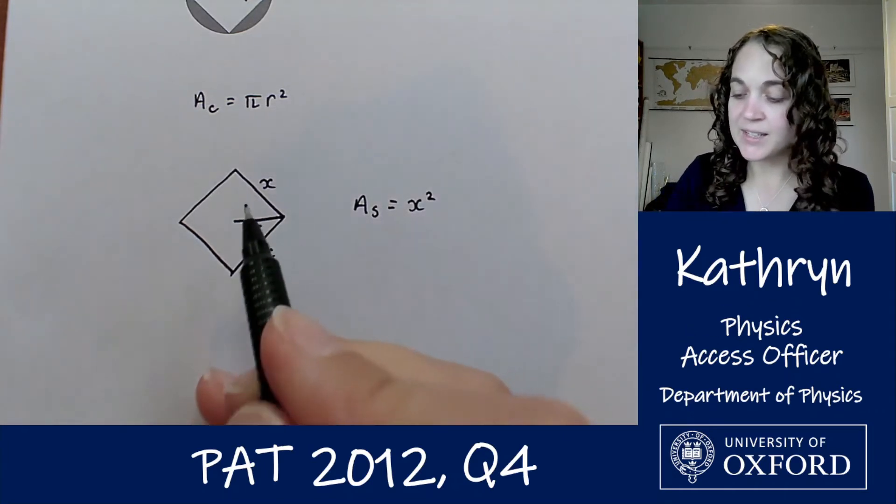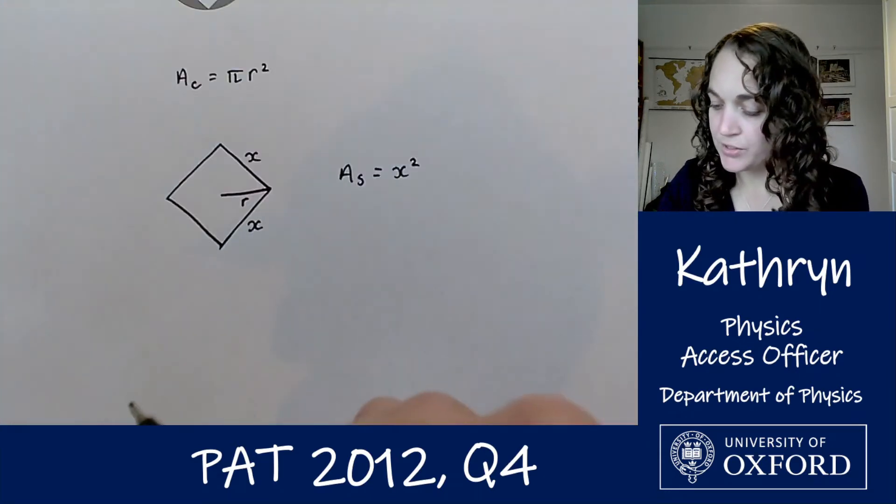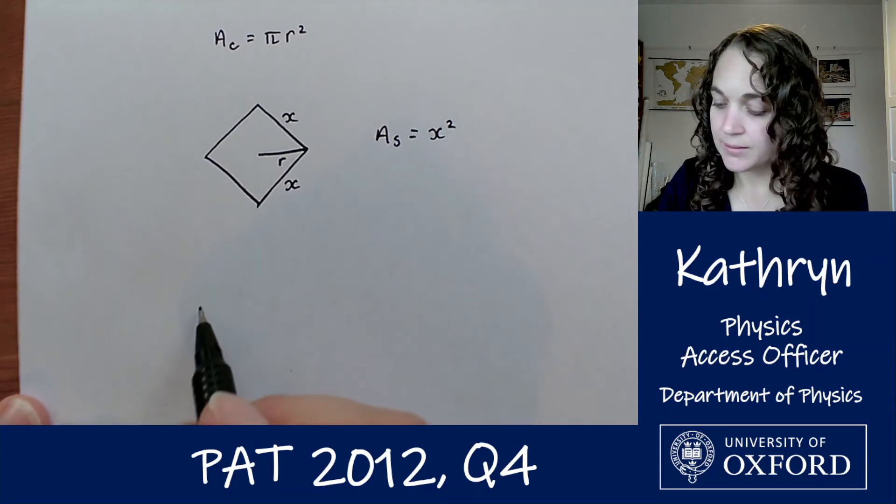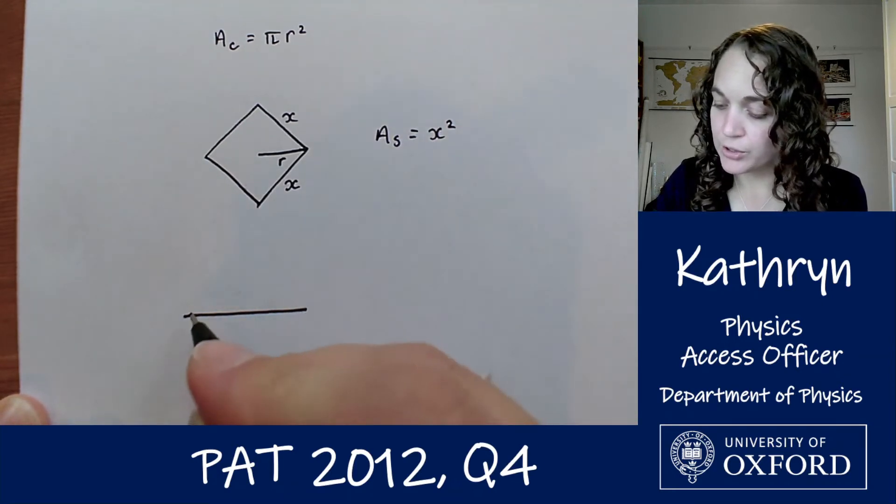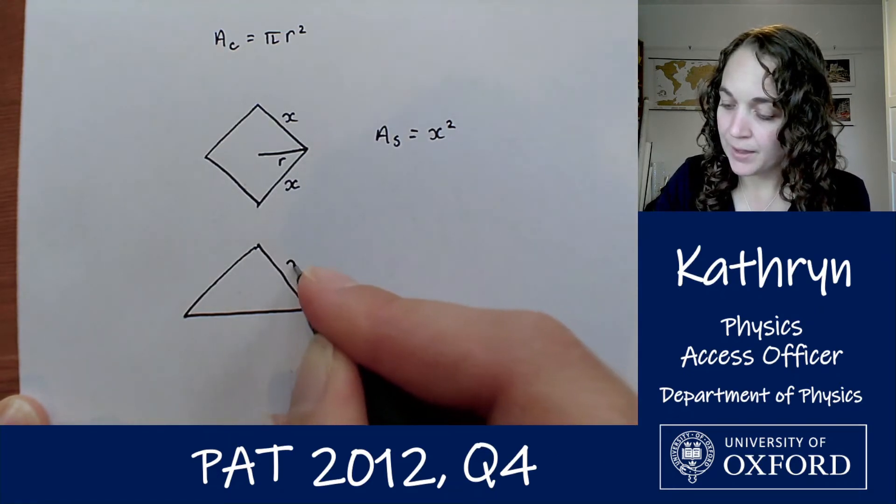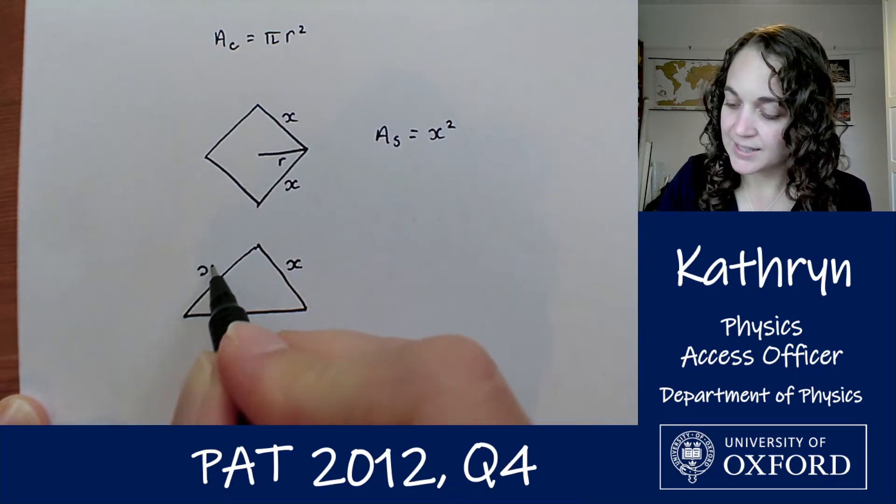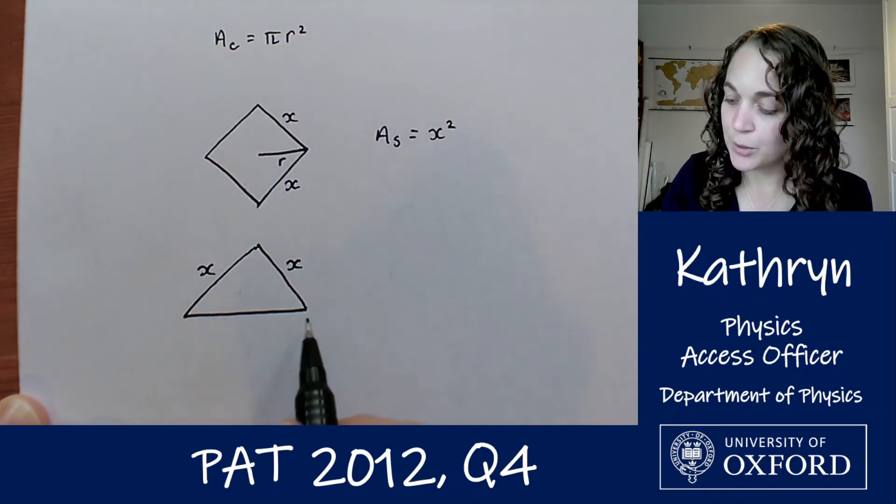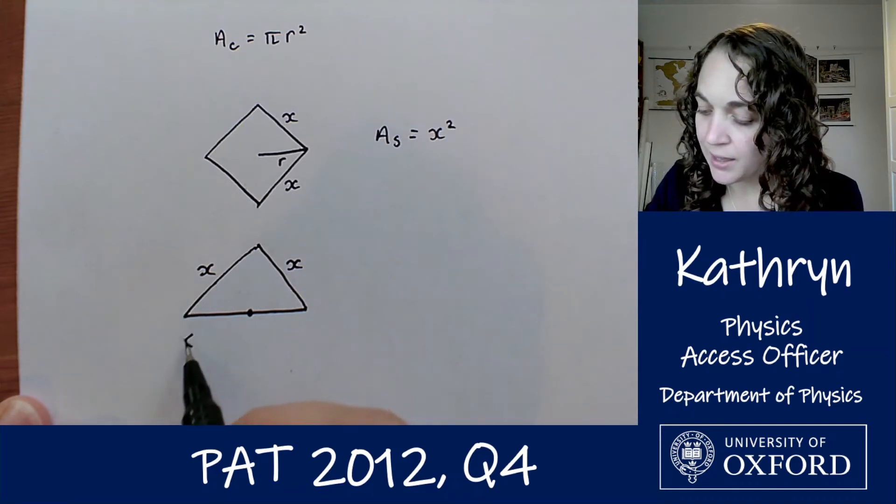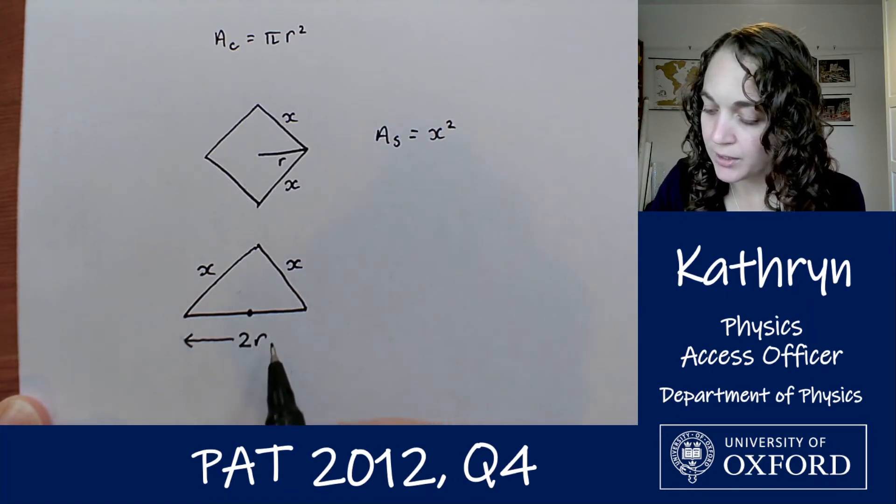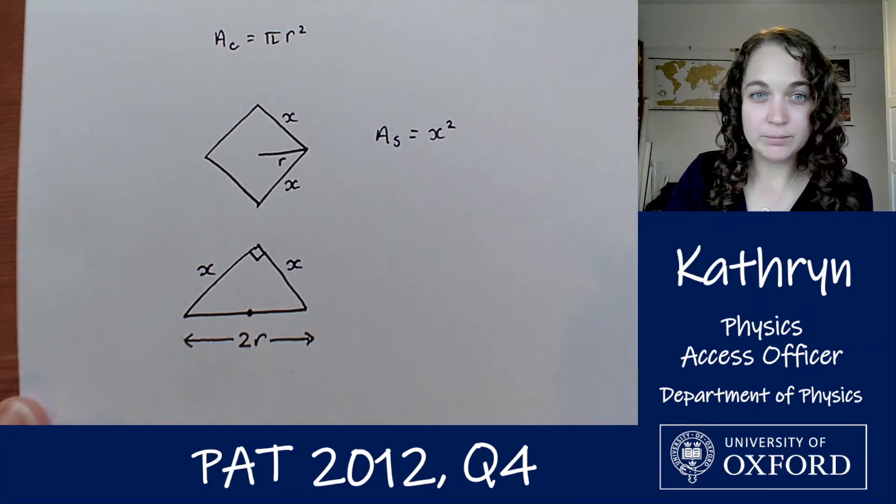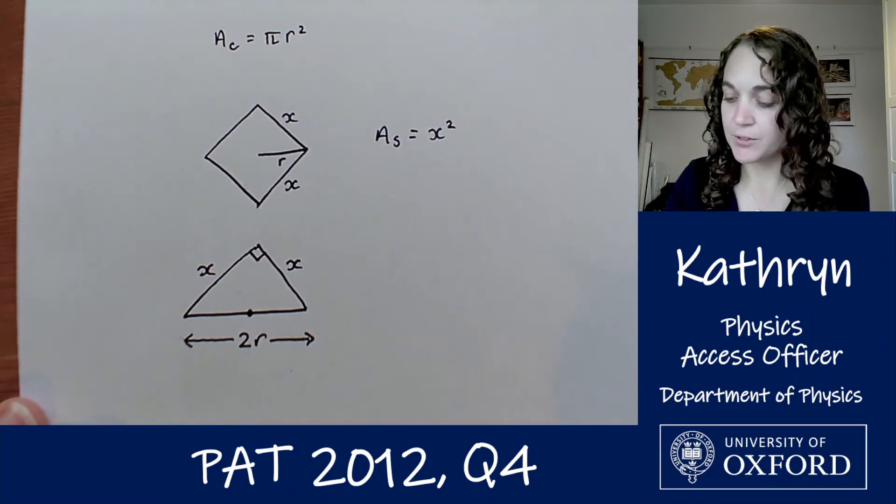And then what we need is a way to relate x to r. So let's sketch out just the top half of this. What we've got there is if that's x, that's x, and this on the bottom is the center of the square or circle, then that means that this length here is 2r. And obviously that is a right angle because it's a square, this is half of a square.